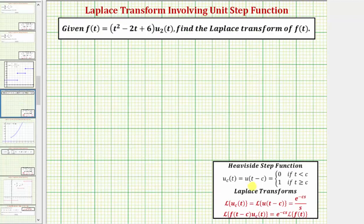To find the Laplace transform of f of t, we'll be using this formula here, where the Laplace transform of f of the quantity t minus c times u sub c of t equals e raised to the power of negative c s times the Laplace transform of f of t. There are a couple of important things to notice: on the left, the values of c must be the same in order to apply this formula, and we have f of the quantity t minus c. On the right, we have f of t.